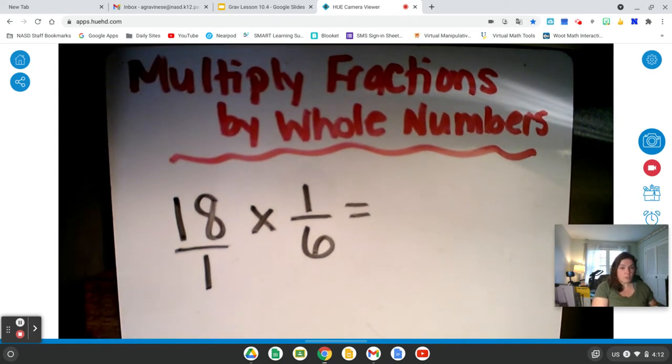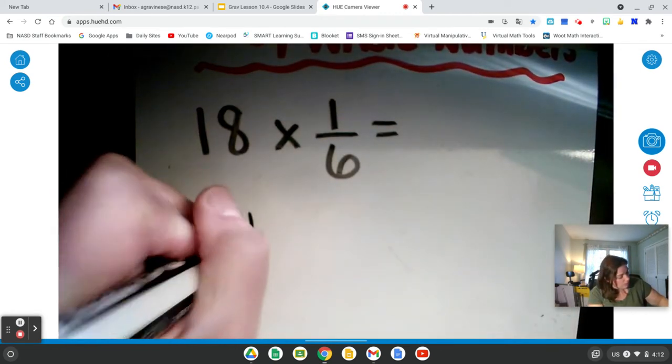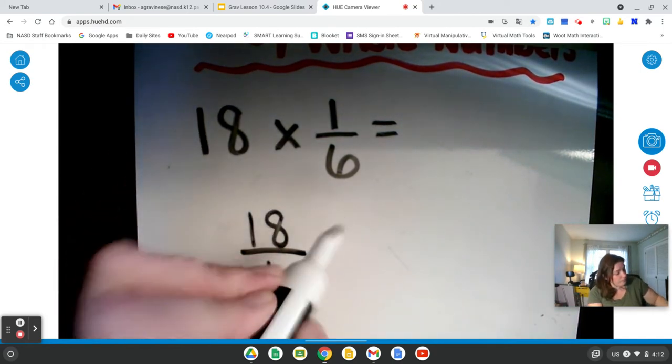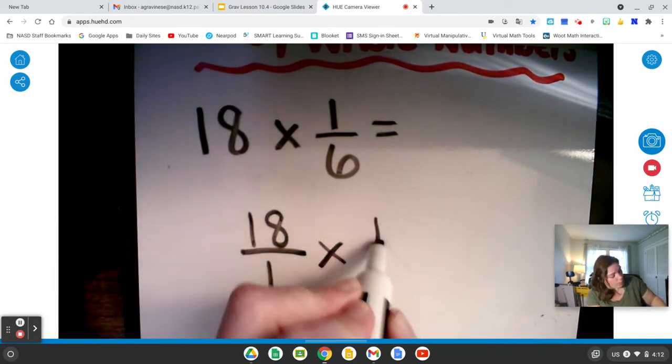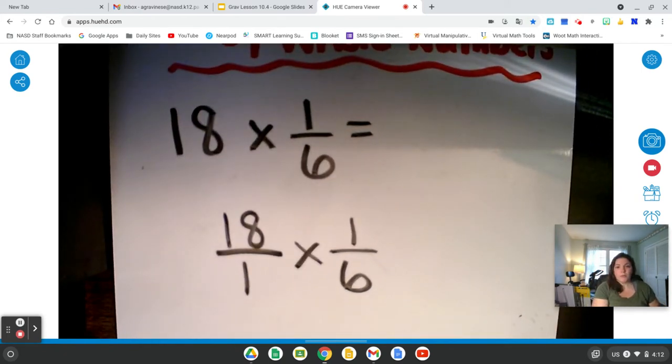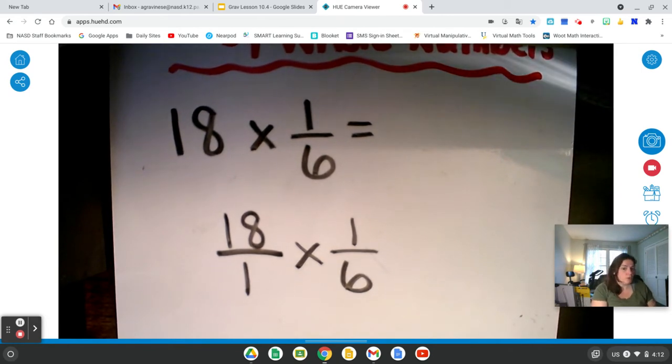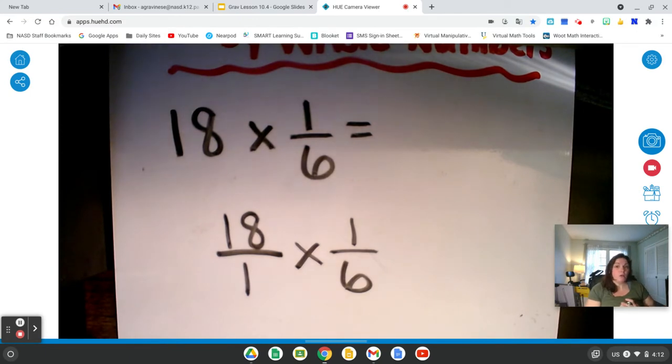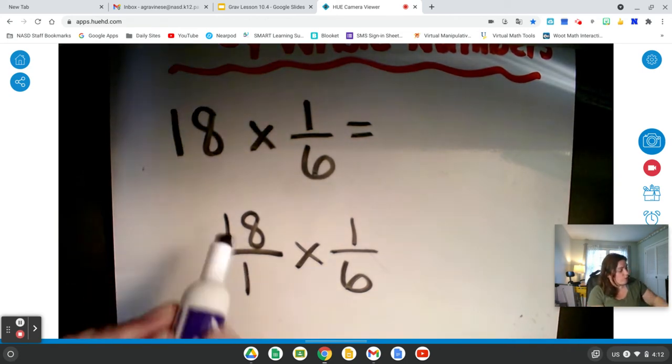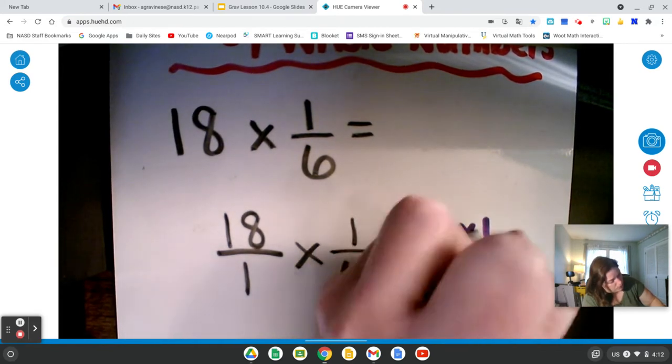Once you've done that, I'm actually going to rewrite that so that everything lines up really nicely. So I have 18 over 1 times my 1 sixth. When you multiply with fractions, it's a little easier than when we were adding and subtracting with unlike denominators. You don't have to worry about finding a common denominator when you're doing multiplication. What we want to do is multiply our numerators together. So we need to take 18 times 1. That's our first step.